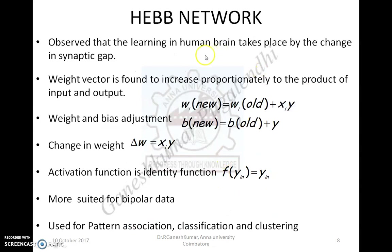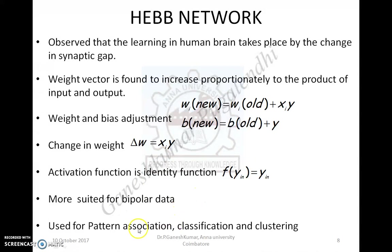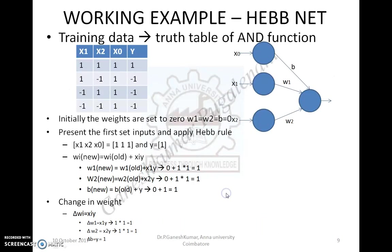Next is the Hebb model. In the previous McCulloch-Pitts neuron model, only net input calculation and output calculation are carried out — there is no weight update process. Hebb was the scientist who observed that learning in the human brain takes place by the change of synaptic gap. He introduced, in addition to net input and output calculation, an expression for weight and bias update: new weight = old weight + delta_w, where delta_w = x_i * y. This model is popularly used for bipolar data and is used for pattern association, classification, and clustering.